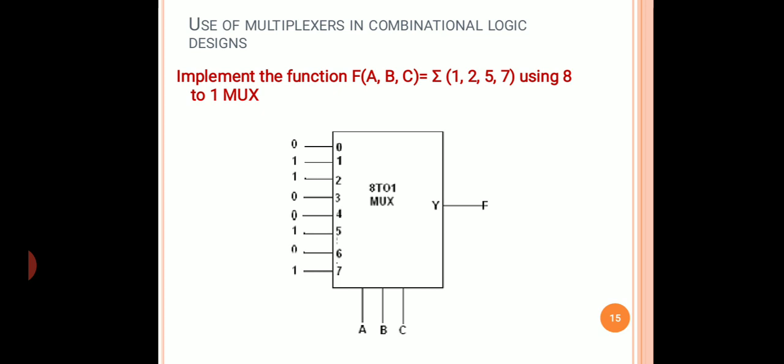The most significant variable A is connected to the most significant select line S2, with S1 and S0 assigned to the remaining variables. Based on the values of the select lines, a particular input is selected. If the select line is 000, input D0 is selected — which is connected to logic 0, so the output is 0. If the select line is 001, input D1 is selected — which is connected to logic 1, so the output is 1.